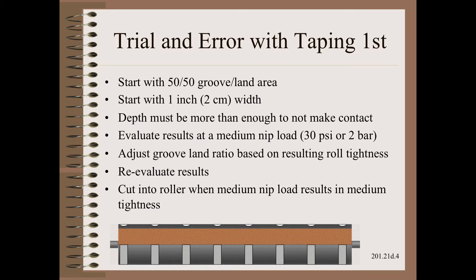One or two iterations should get you into a range where you achieve a medium winding tightness with a modest value of nip load. We use the grooving as a coarse knob to get us close, and then the conventional nip loading level to vary for specific situations as the fine knob.